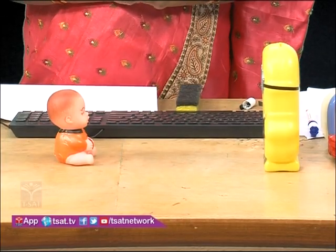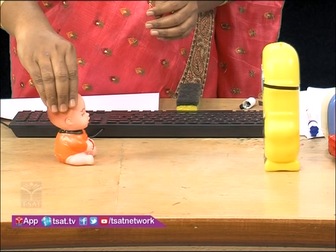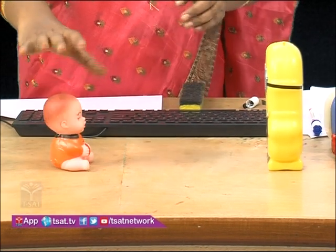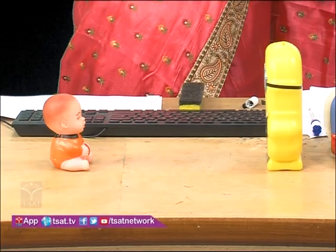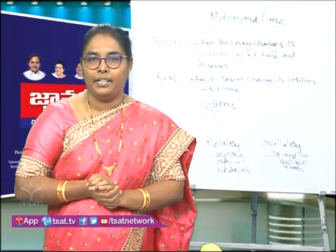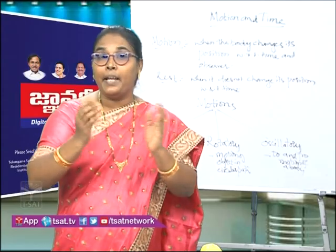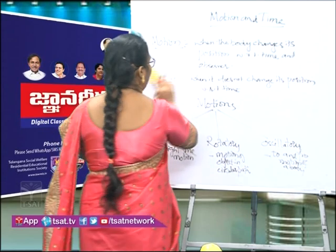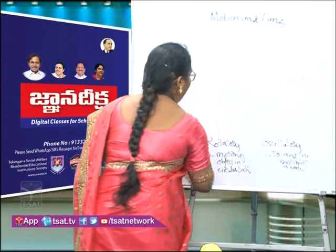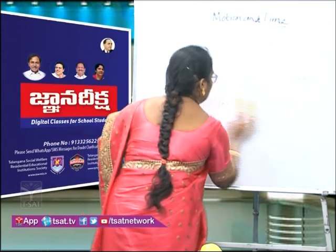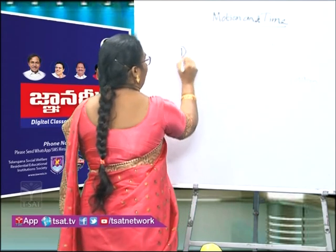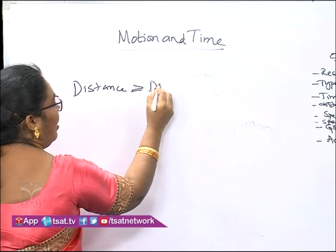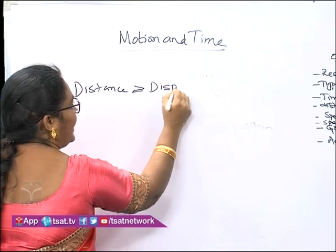Now, displacement. This is the initial position of the boy, and after moving here and there, he came and sat in the same position. So there is no change in the initial and final positions, and displacement is zero. Distance is greater than or equal to displacement.